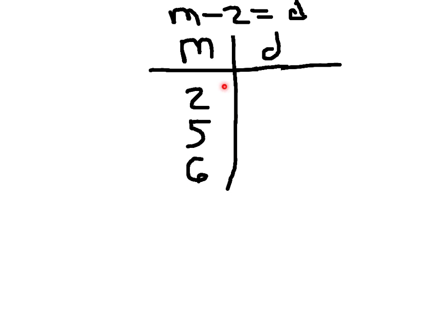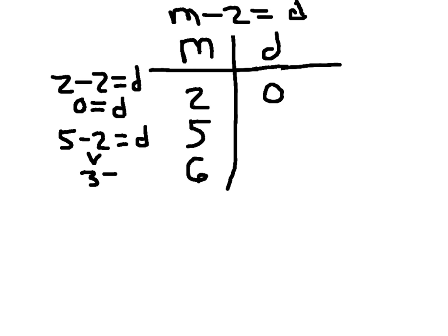Now these values of m, 2, 5, and 6 were given to us. And then so what we have to do is we have to solve for d here for each of these values. When m is 2, we put 2 in here for m, and we solve that 2 minus 2 equaling d. And so 2 minus 2 equals 0. So d equals 0 when m is 2. When m is 5, we plug 5 in for the m to solve 5 minus 2 equaling d. 5 minus 2 is 3 equaling d. So d is 3. And for 6, 6 minus 2 equaling d. 6 minus 2 is 4, which equals d. So 6 and 4 go together for those values.